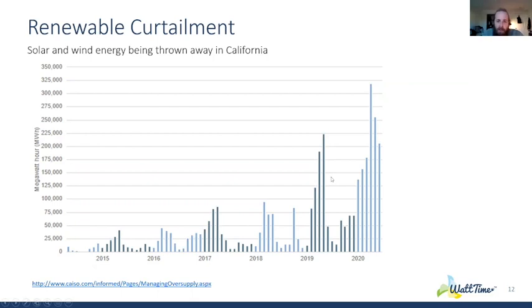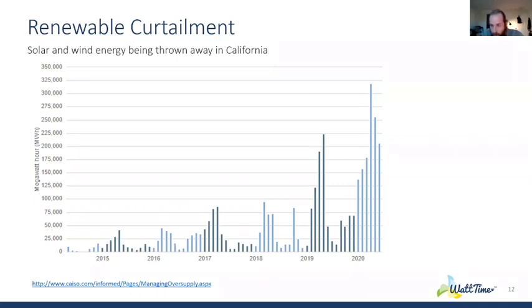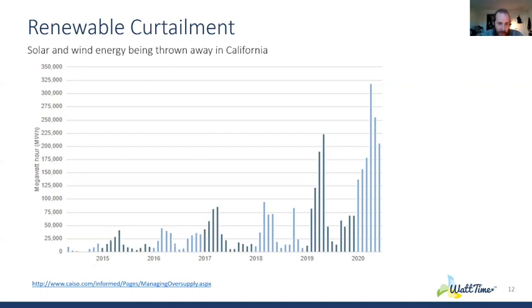We're starting to see this behavior emerge in Texas, the Midwest, Germany, and Ireland as renewable energy oversupply grows at particular times. On storage: we think storage is a critical piece of the story, but load flexibility may be a cheaper, more effective approach. If you can shift load in your building without installing a multi-million dollar battery, you're helping solve this problem in addition to all the storage solutions we'll still need.